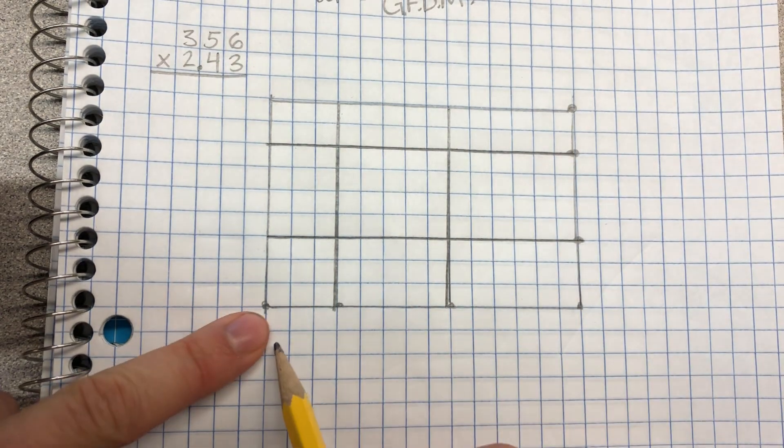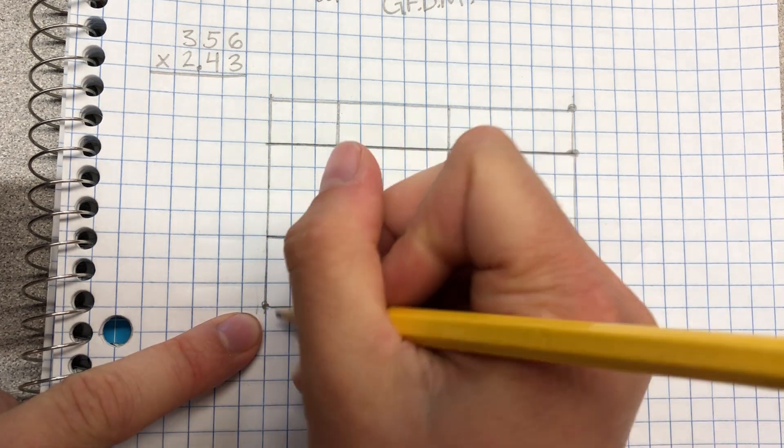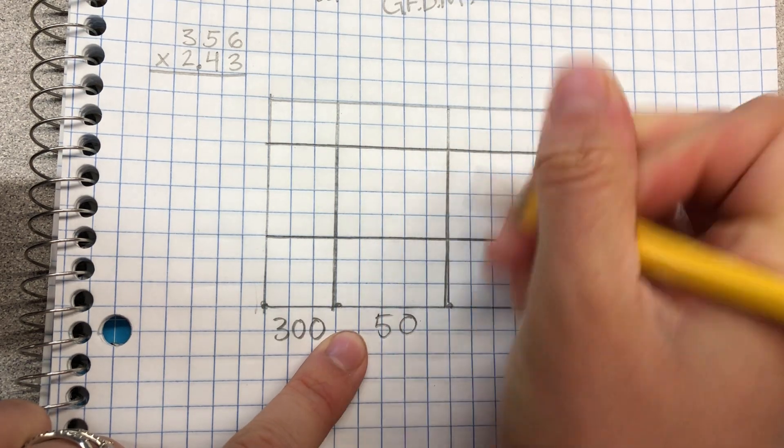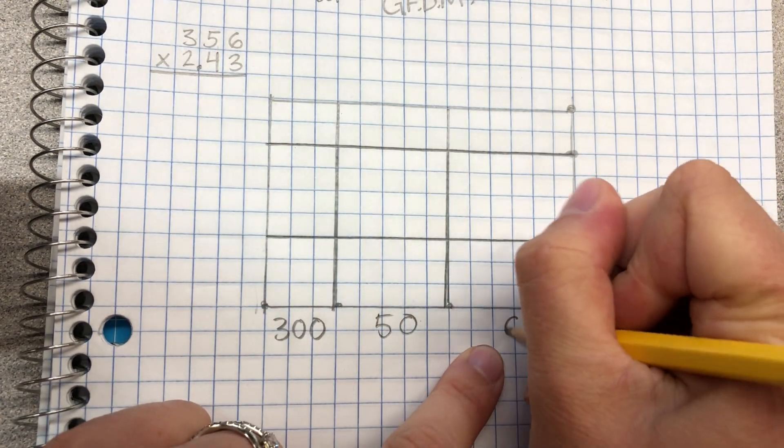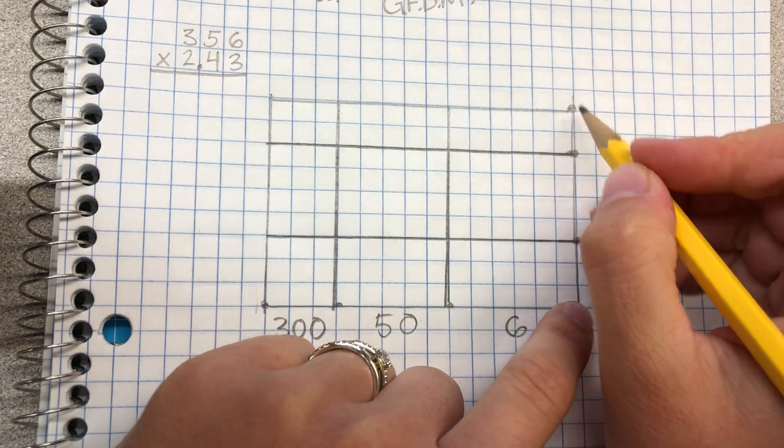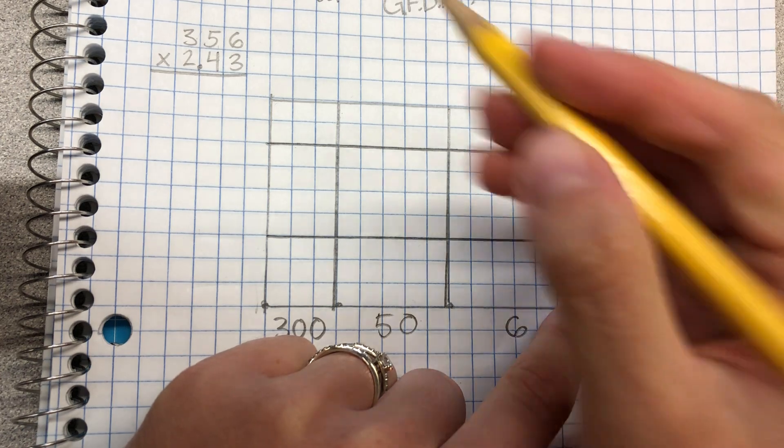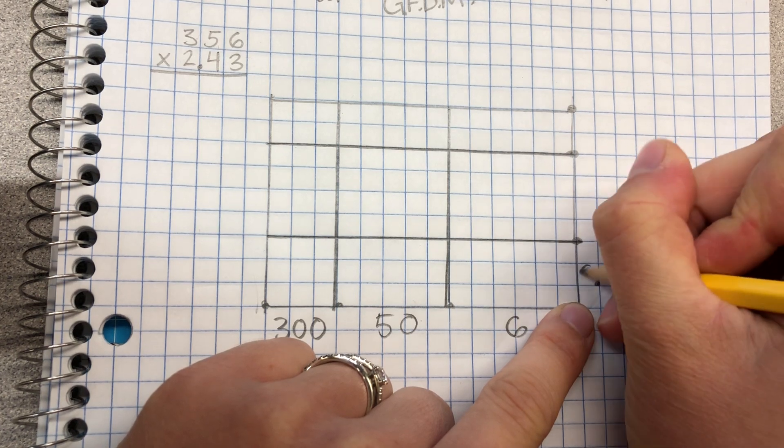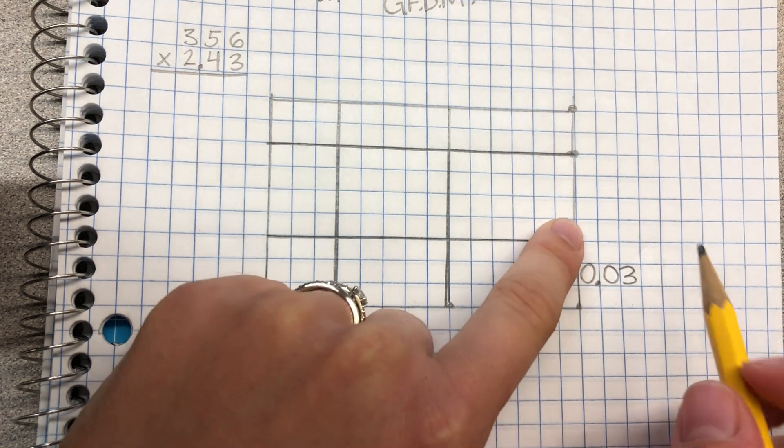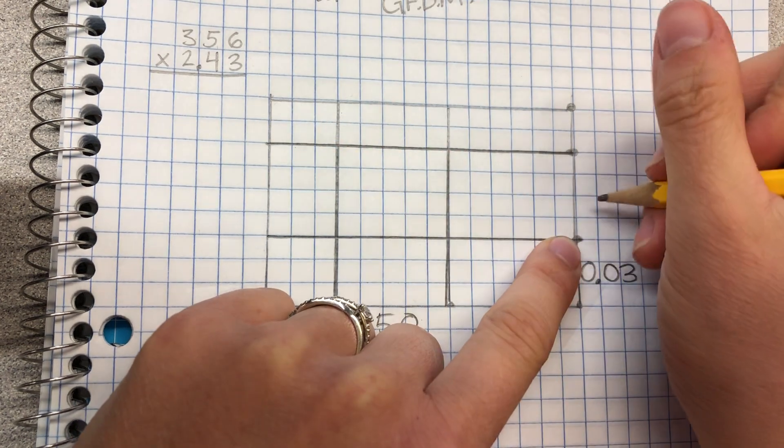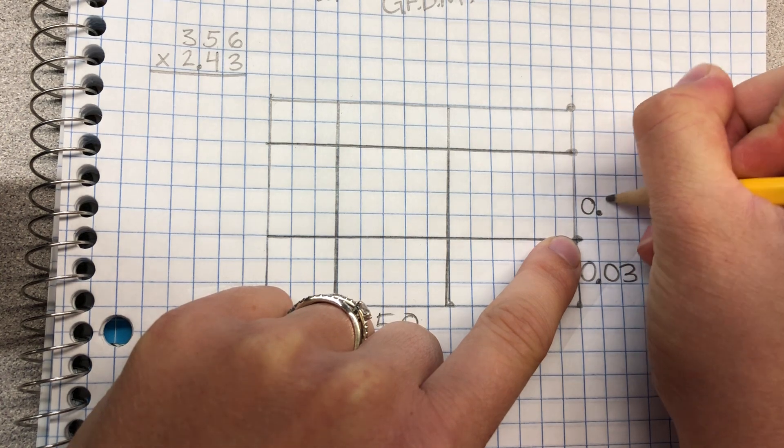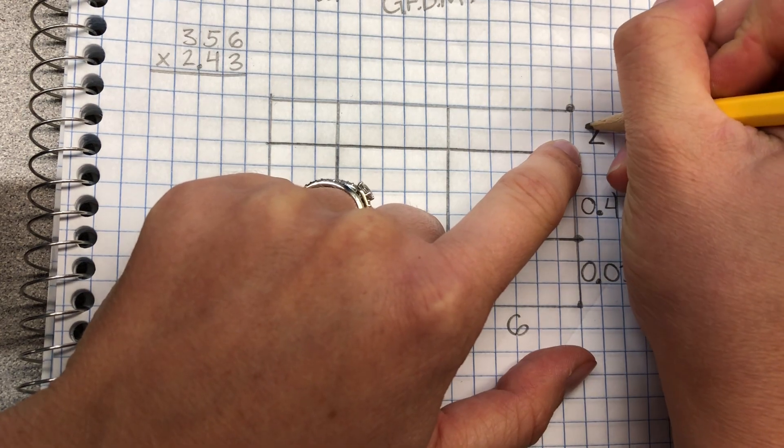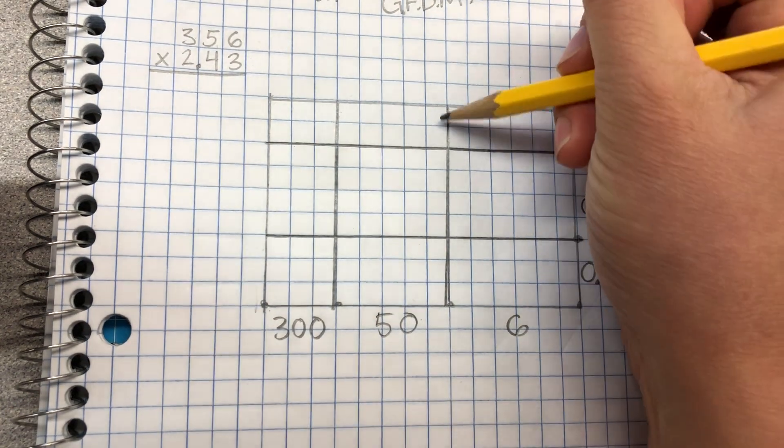Alright, so now we need to label these parts. So the 3 down here represents the 300 from the multiplicand. Here we have 5 which represents the 50 from the multiplier. And the 6 here represents the 6 from the multiplicand. Then going up we're using our multiplier. So the first number is the 3 and that represents not just 3 but 3 hundredths. So we'll write that like this. Next we have 4 which represents 4 tenths which we would write like this. And then up we go on to our 2 which just is 2 units.